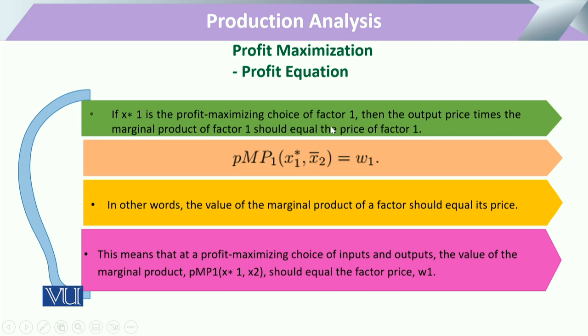In this equation, we have put a bar on X2, meaning we are going to check the effect of changing only one input. We can check how one amount of the output is going to change, or how that input is going to affect the total optimization.